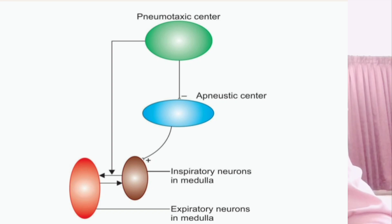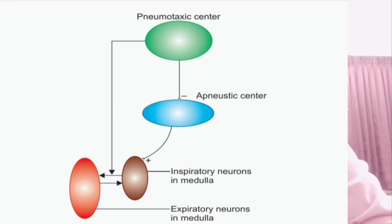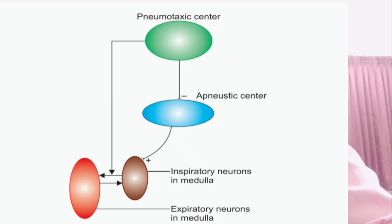Maintenance of inspiration: the apneustic center activates the dorsal respiratory group, which generates inspiratory ramp signals. These signals produce a smooth rise in tidal volume to 500 ml, thereby maintaining inspiration.